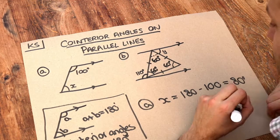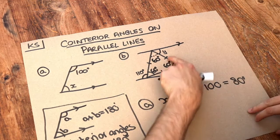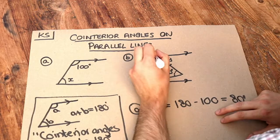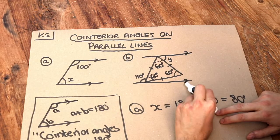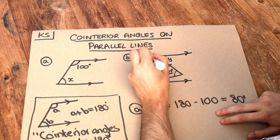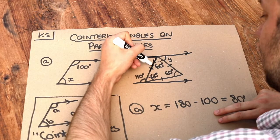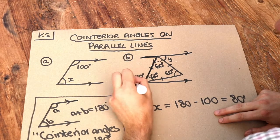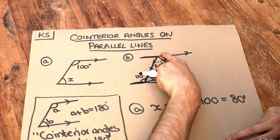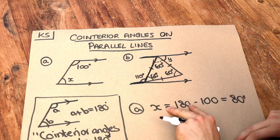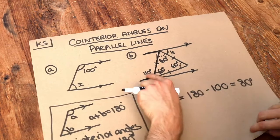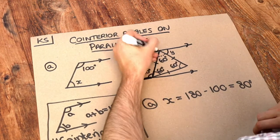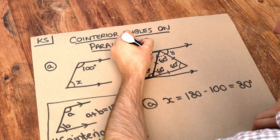We want to work out angle y over here. Because these two lines are parallel, we have this C shape — it's a kind of backward C, but it's still a C shape — and therefore we can apply co-interior angles.